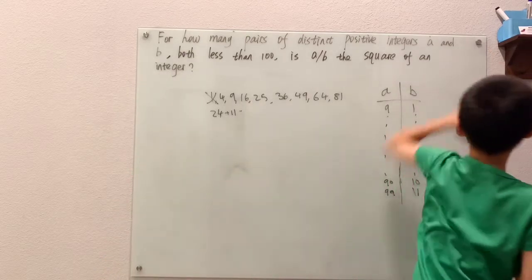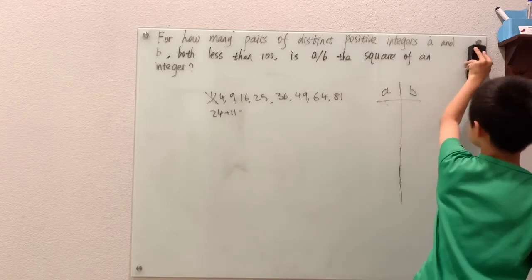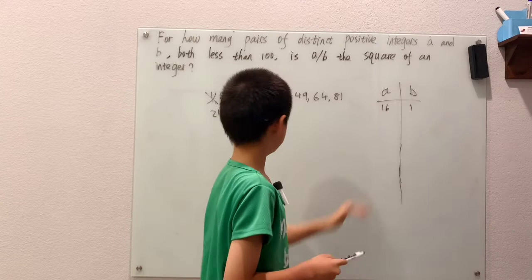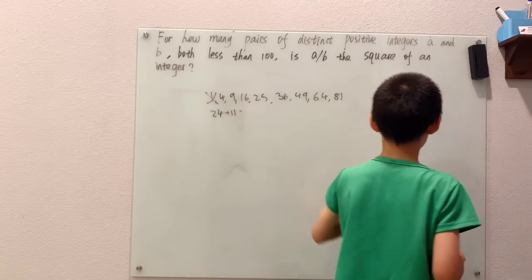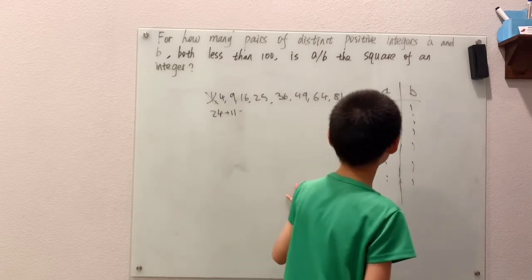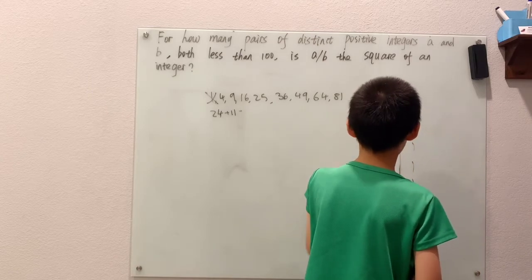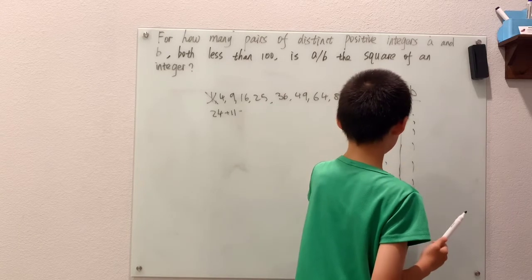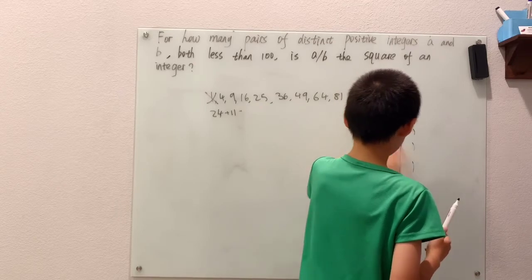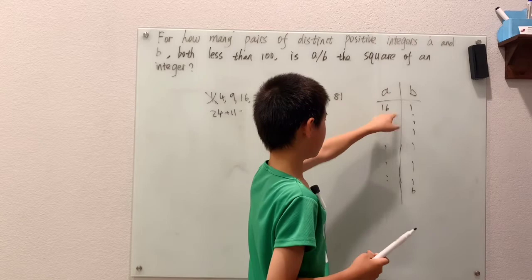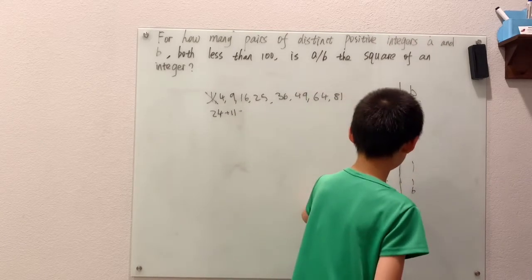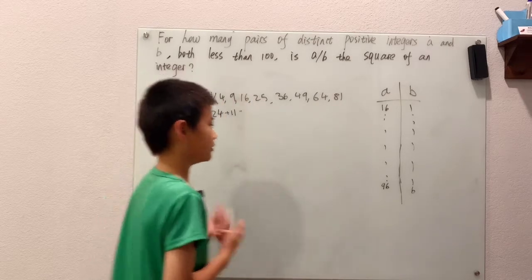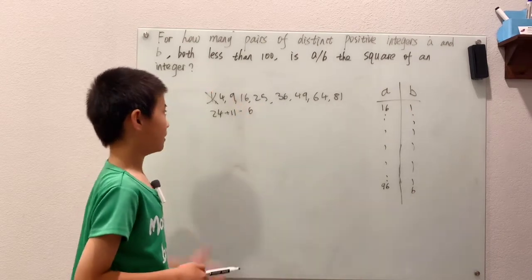Well for 16, again we can do the same thing. First of all again I'll start with A is 16 and B is 1, 16 over 1. This goes all the way up. 16 is a little bit harder, I don't know my 16 times tables that well. 16 times 6, 10 times 6 is 60 plus 6 times 6 is 36, so 60 plus 36 is 96. And 7 times 16 is just going to be way over 100, which means there are 6 options if you want the outcome of A over B to be 16.